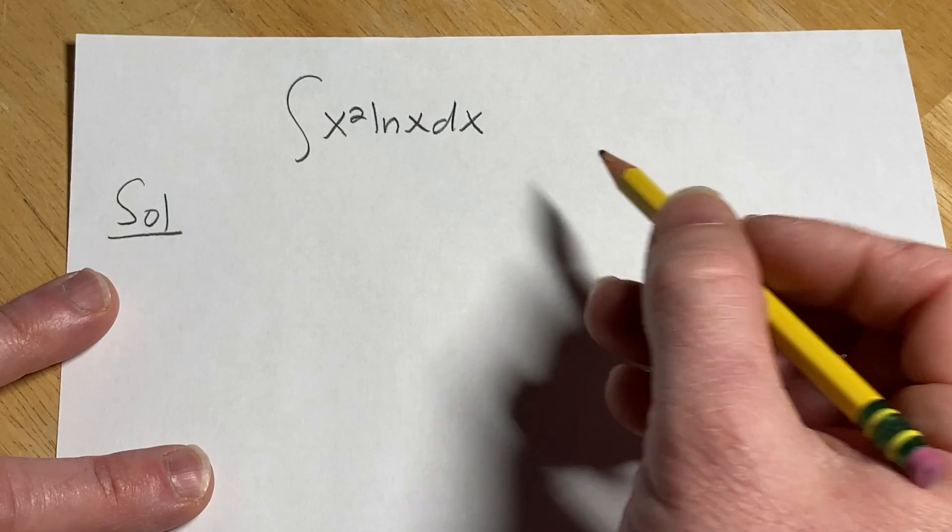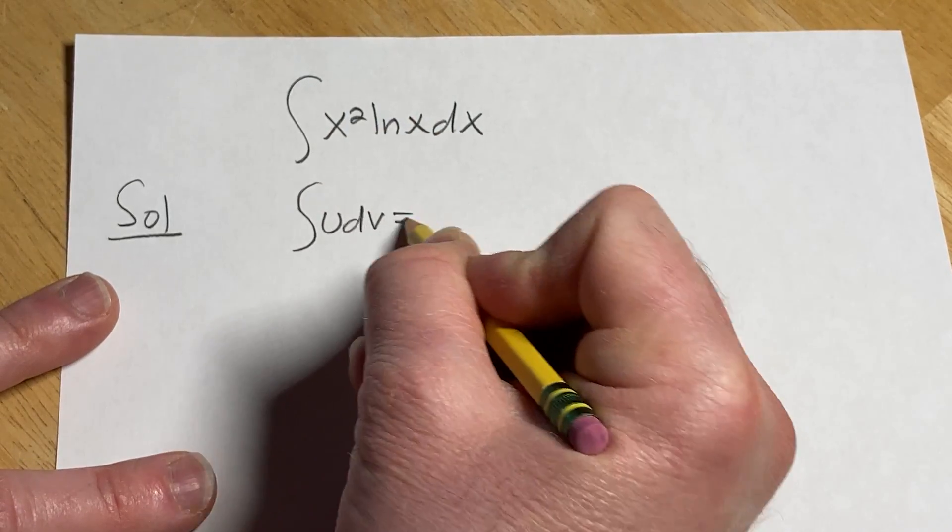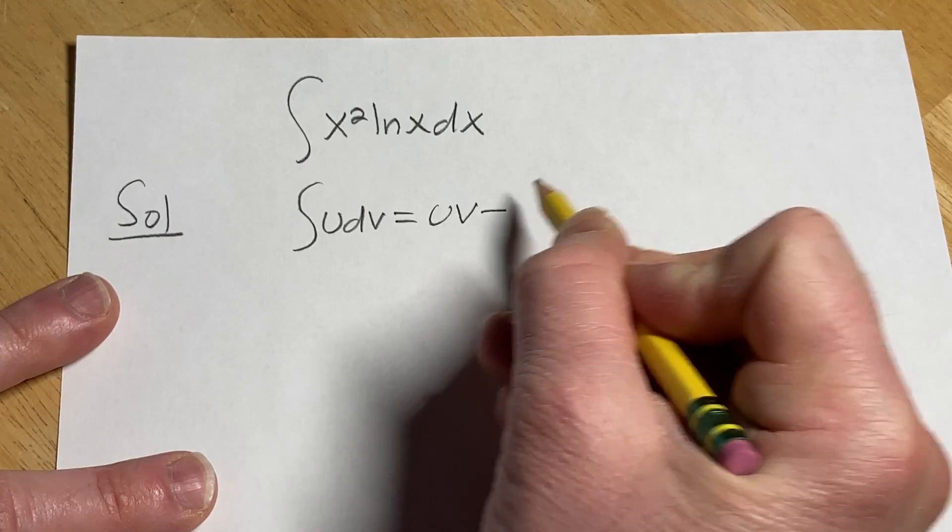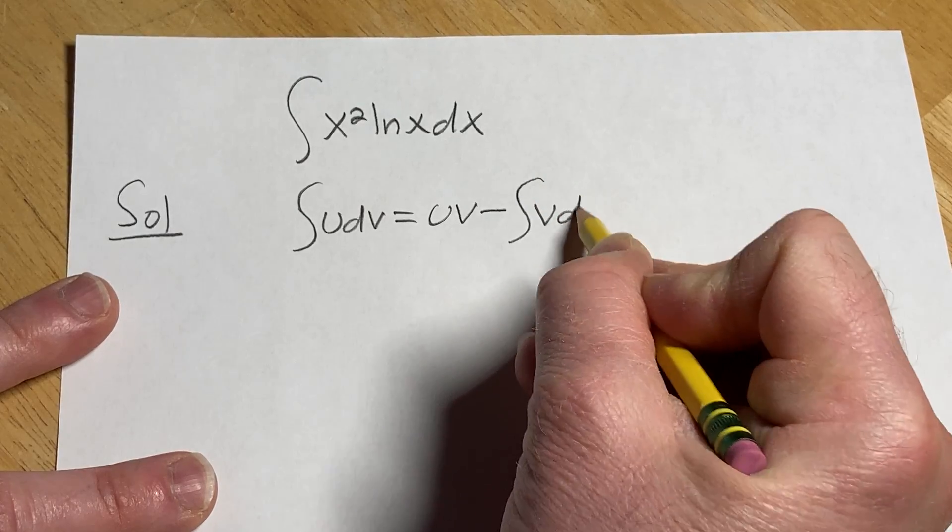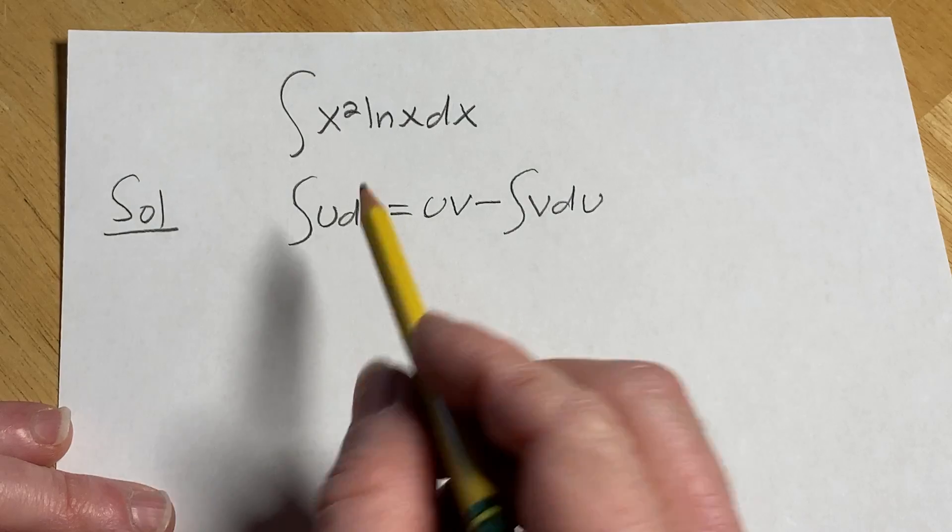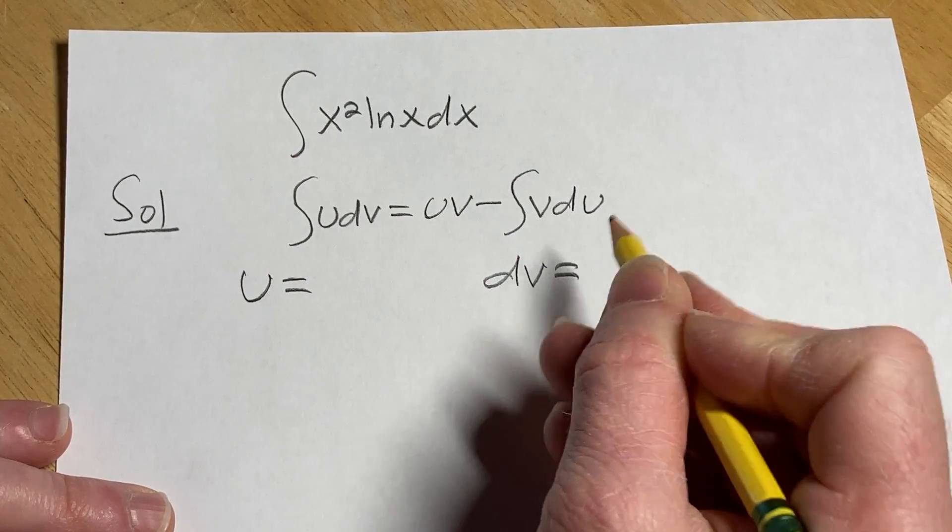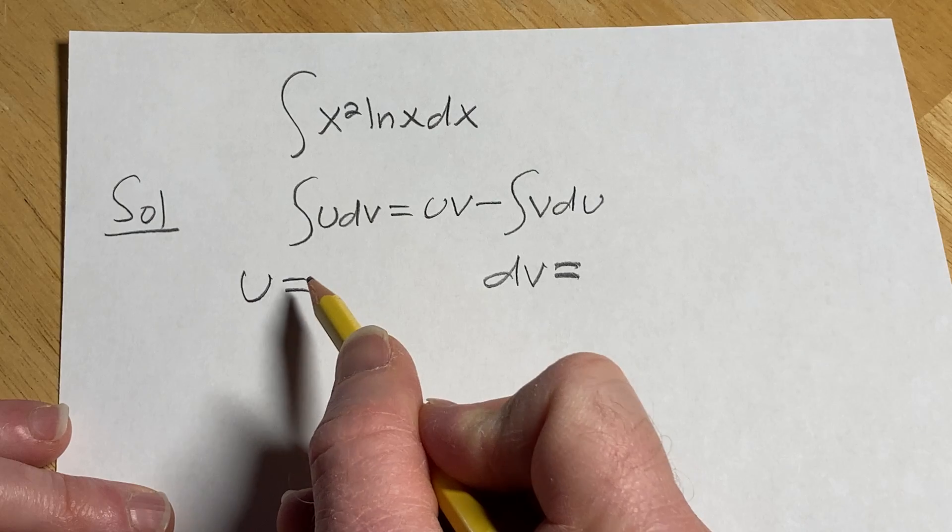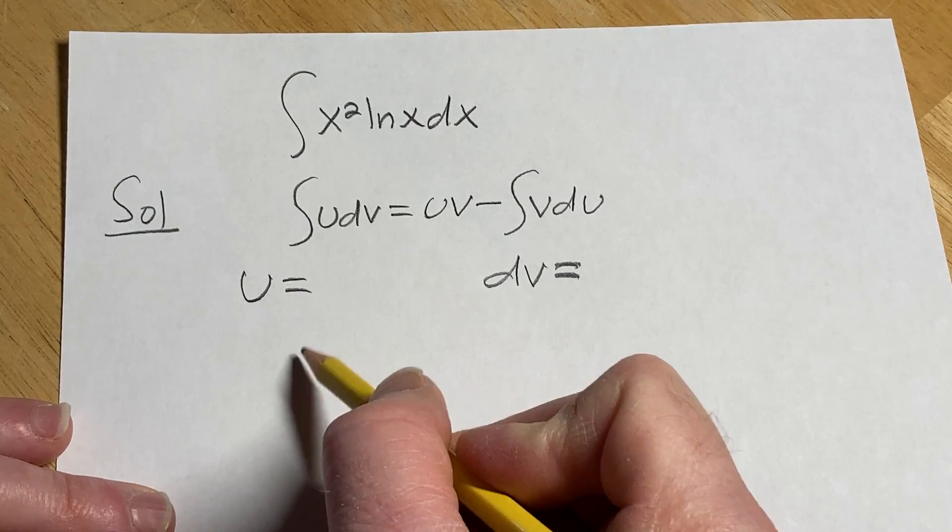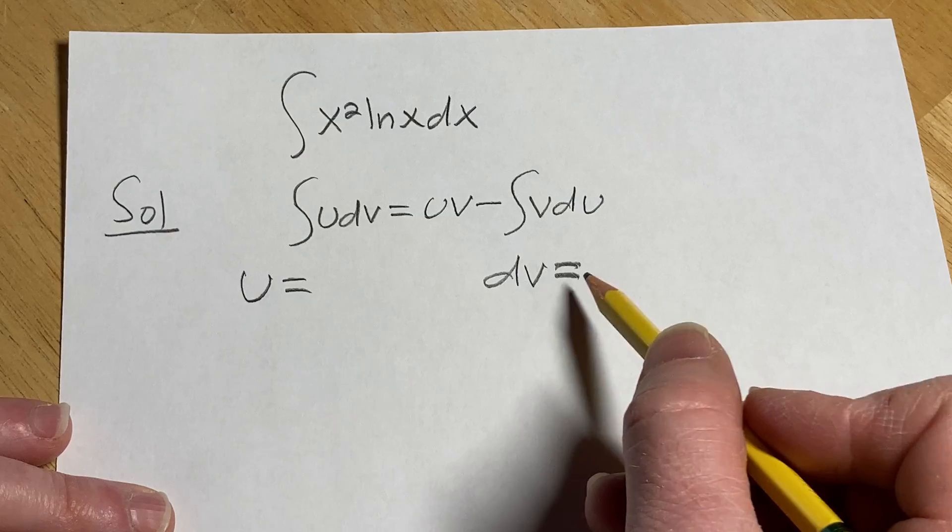Integration by parts formula says if you have the integral of UdV this is equal to UV minus the integral of VdU. As a general rule when you're using the integration by parts formula, you want to pick your U and your dV so that the derivative of U is simpler than U and dV is the most complicated part that you know how to integrate.